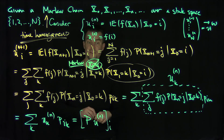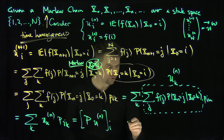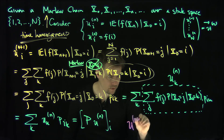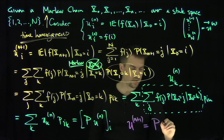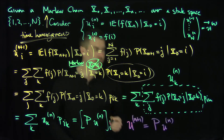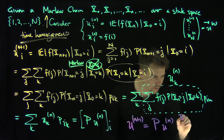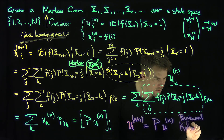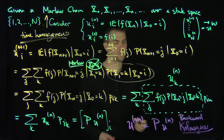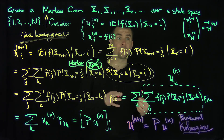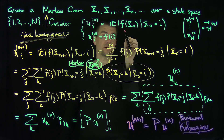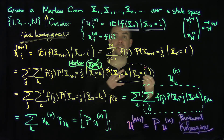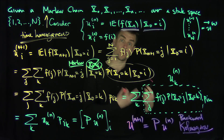This is now the backward Kolmogorov equation. In general, for every i, this tells us that u_{n+1} is equal to the transition matrix P times u_n. The backward Kolmogorov equation is used in many applications because we're asking for the expected value of some terminal payout given initial conditions — an expected value of a terminal value problem. That's why it's called the backward Kolmogorov equation.